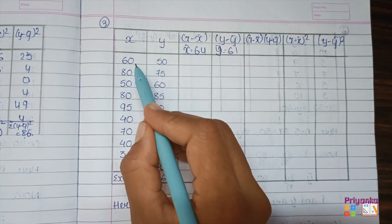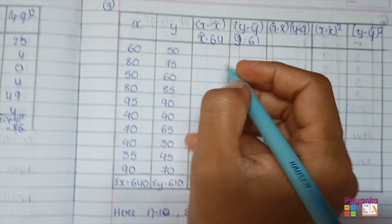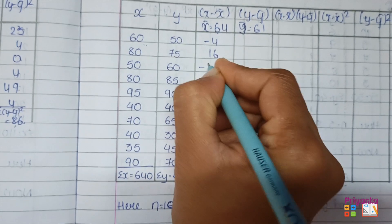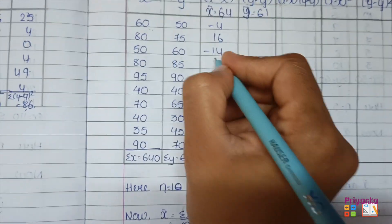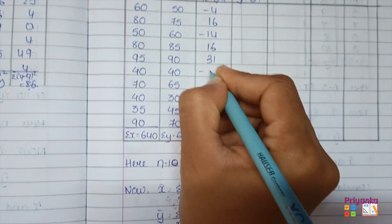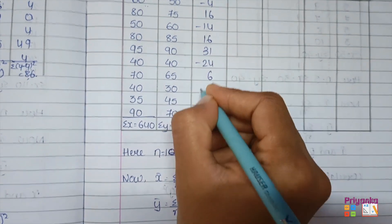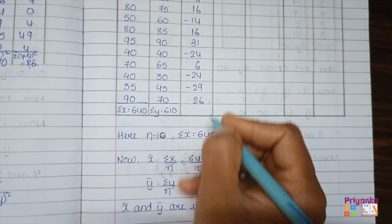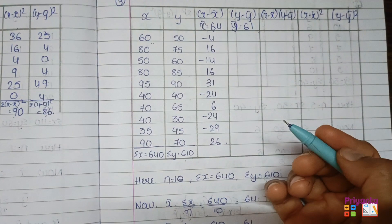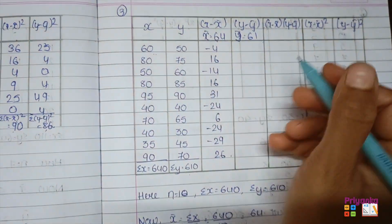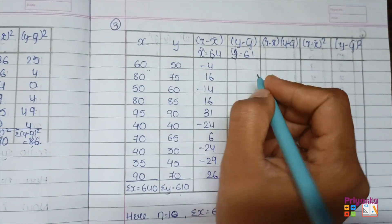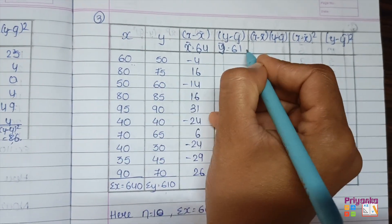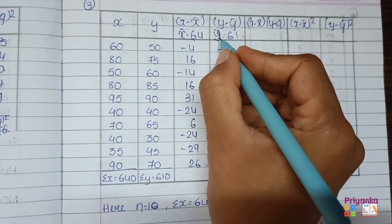Starting the (x − x̄) column: 60 − 64 = −4, 80 − 64 = 16, and continue with the same process. Be sure and concentrate when doing calculations — a single digit mistake will give a wrong answer. For (y − ȳ): 50 − 61 = −11, and continue similarly.